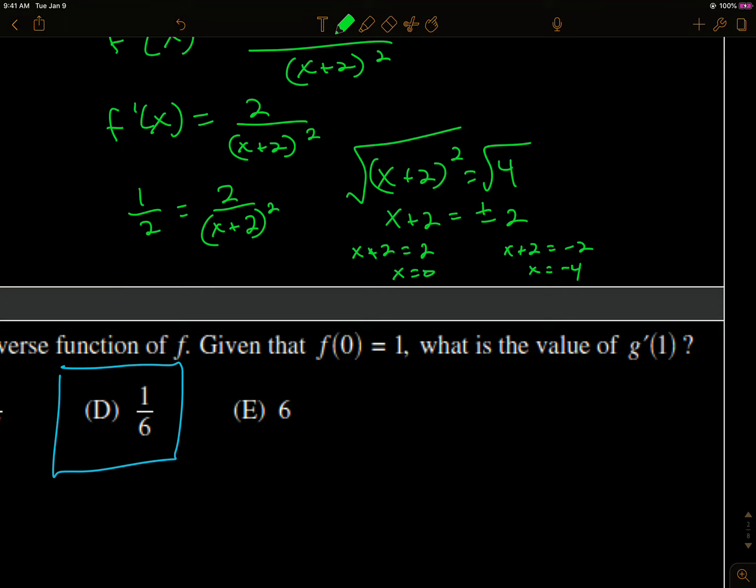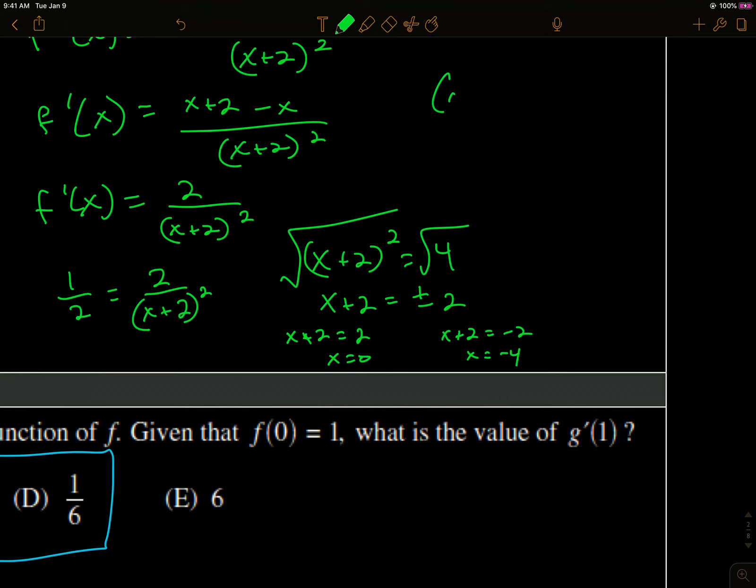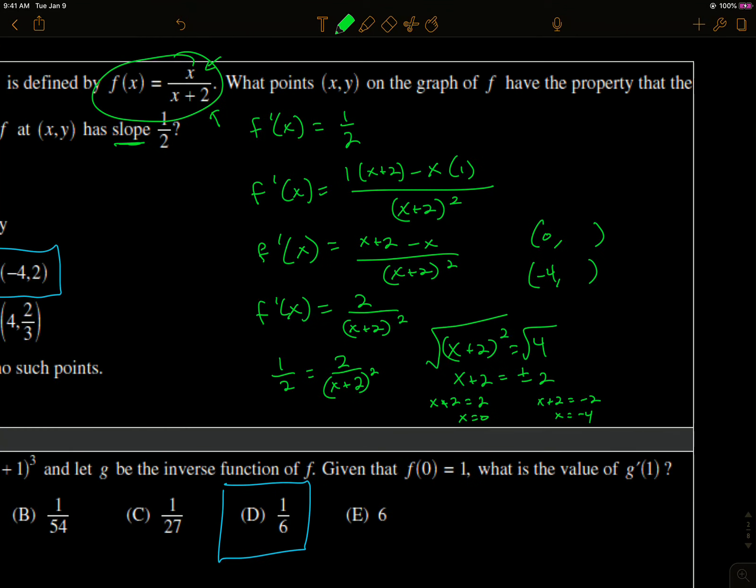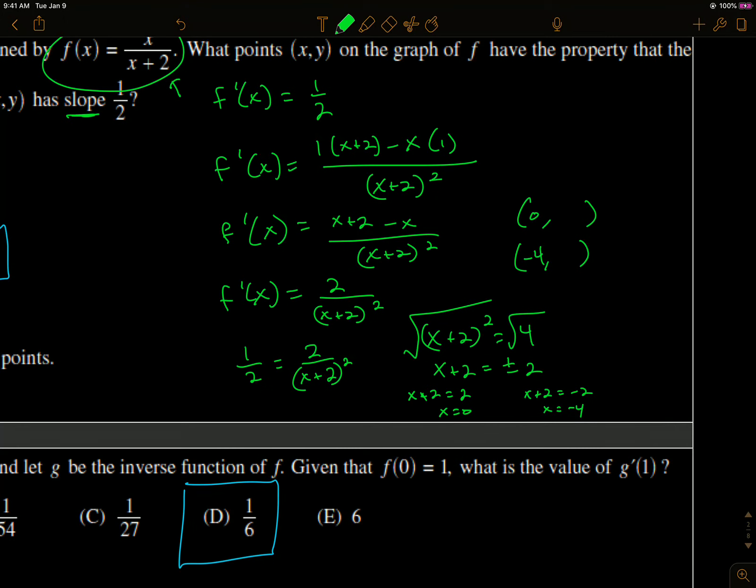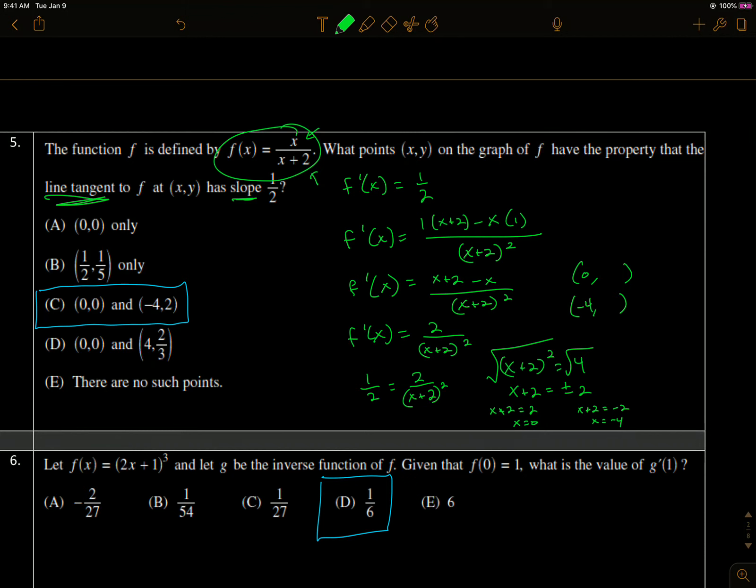This equation gives x equals negative 4. So it occurs at an x value of 0 and the tangent lines at those points. Now they want the points on the curve, so we're looking for the point of tangency for each one, which means I plug them back in. Those are the x values where my slope is 1 half on this curve.